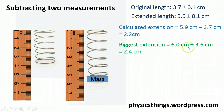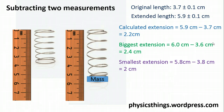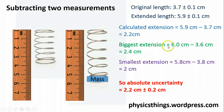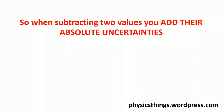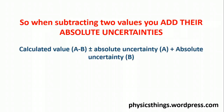The biggest extension — taking the +0.1 option on the longer reading and the −0.1 on the shorter — gives me 2.4 cm. The smallest extension — taking −0.1 on the longer and +0.1 on the shorter — gives me 2.0 cm. So again I find myself with a calculated extension of 2.2 ± 0.2 cm. Just like with adding, if you subtract two values you add their absolute uncertainties.